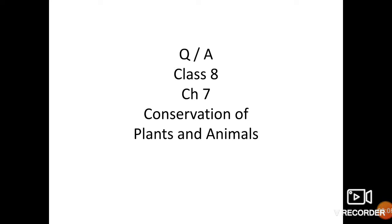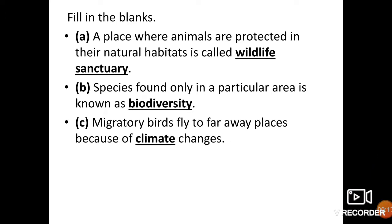Good morning everyone. Today we are going to discuss the question answers of this chapter — Conservation of Plants and Animals. The first question is fill in the blanks. A place where animals are protected in their natural habitats is a wildlife sanctuary. A species found only in a particular area is known as an endemic species. The particular area mein jo bhi plants aur animals ki species present hoti hai usko us area ki biodiversity kehte hain. Migratory birds fly to faraway places because of climate change.